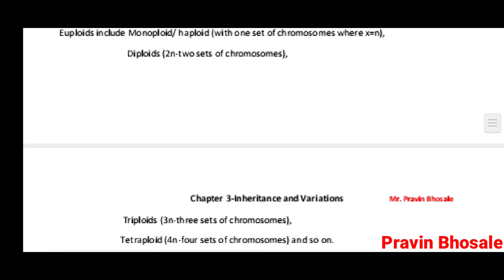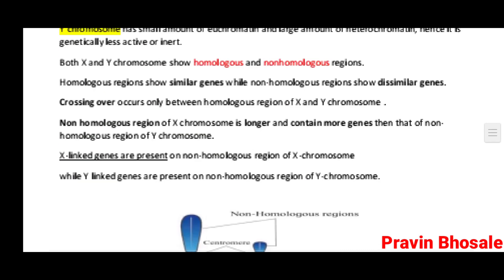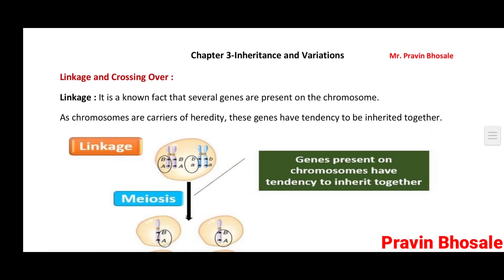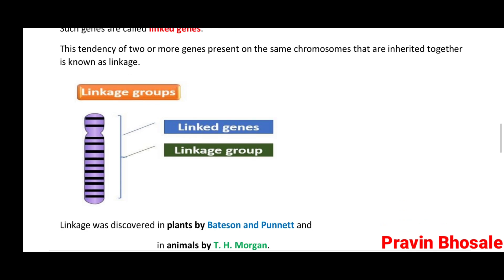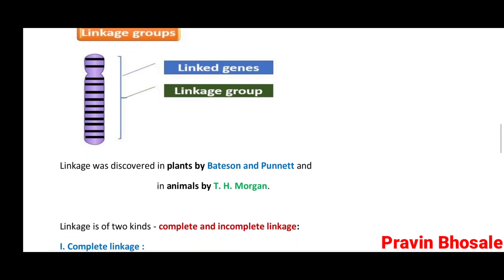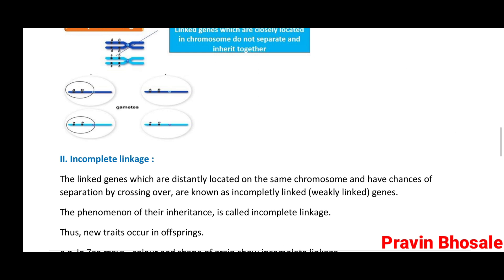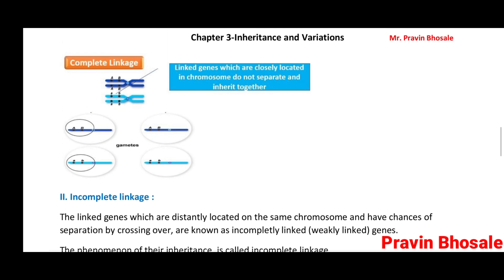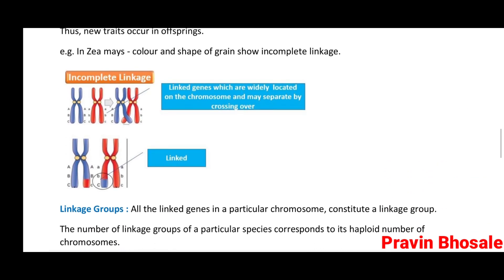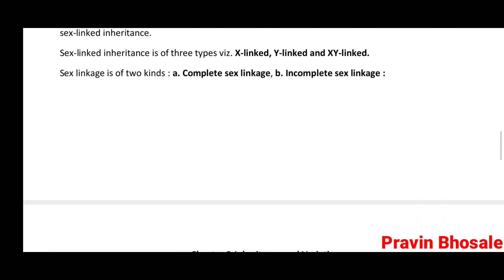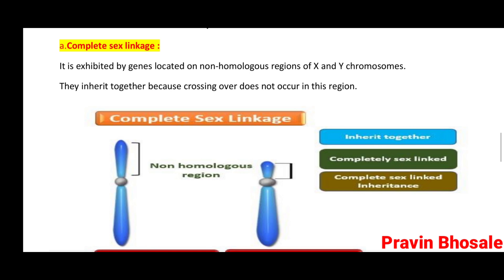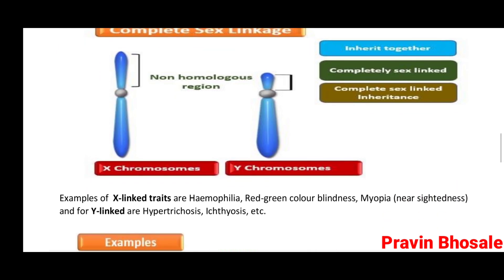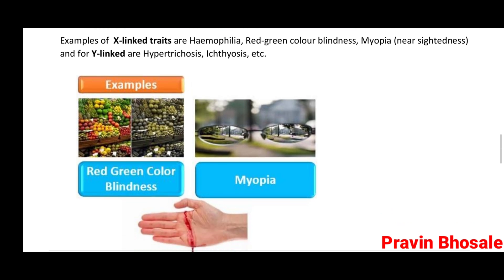Then multiple alleles. Structure of chromosome. Here you can see linkage and crossing over. Then linkage group. Complete linkage. Incomplete linkage. Complete sex linkage. These are the examples.